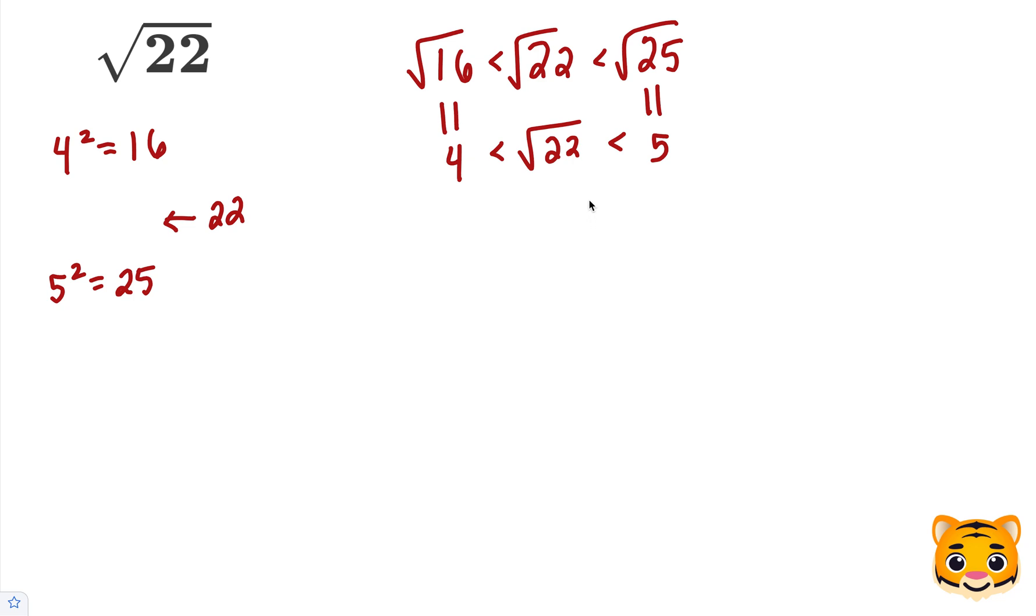Now we can see that the square root of 22 lies between 4 and 5. However, 22 is a little bit closer to 25 than it is to 16. So we'll pick a tenth-place decimal a little bit closer to 5 than to 4 to multiply out to see how we can get to 22.